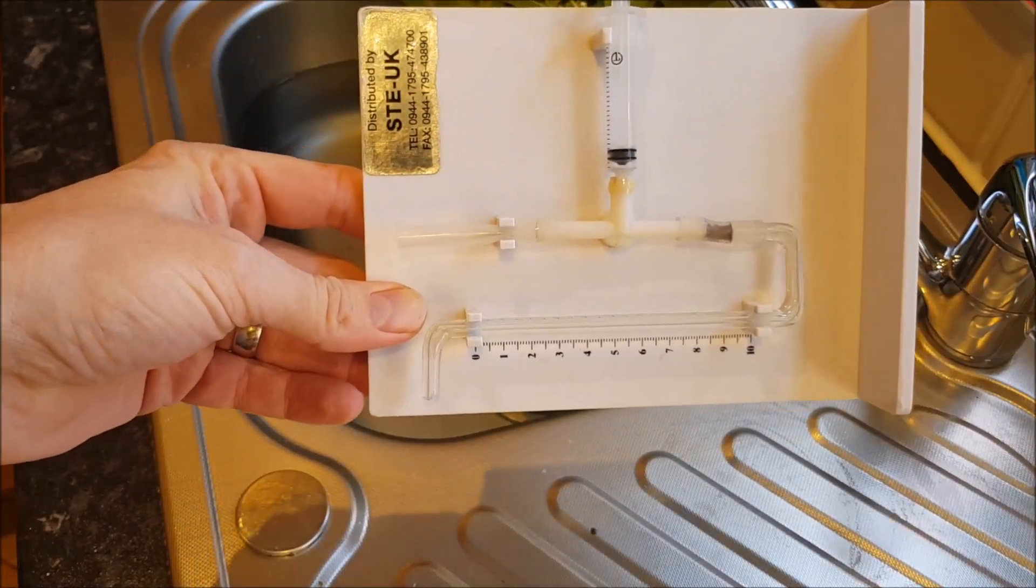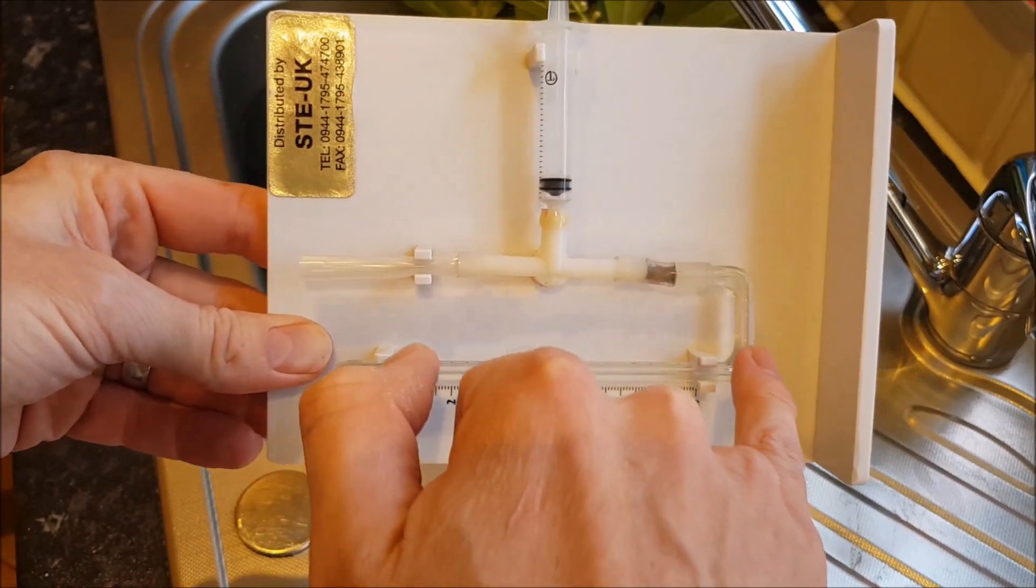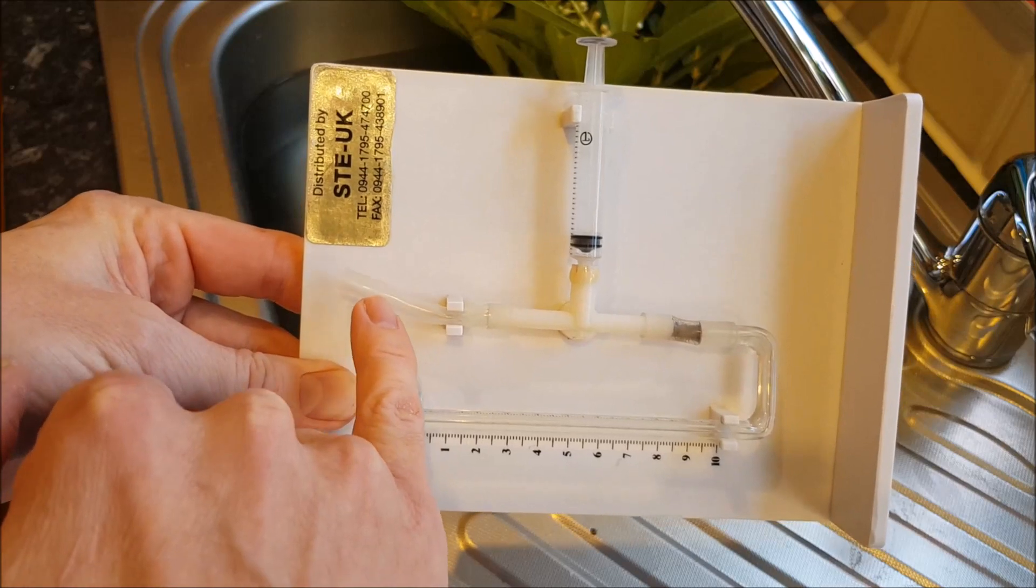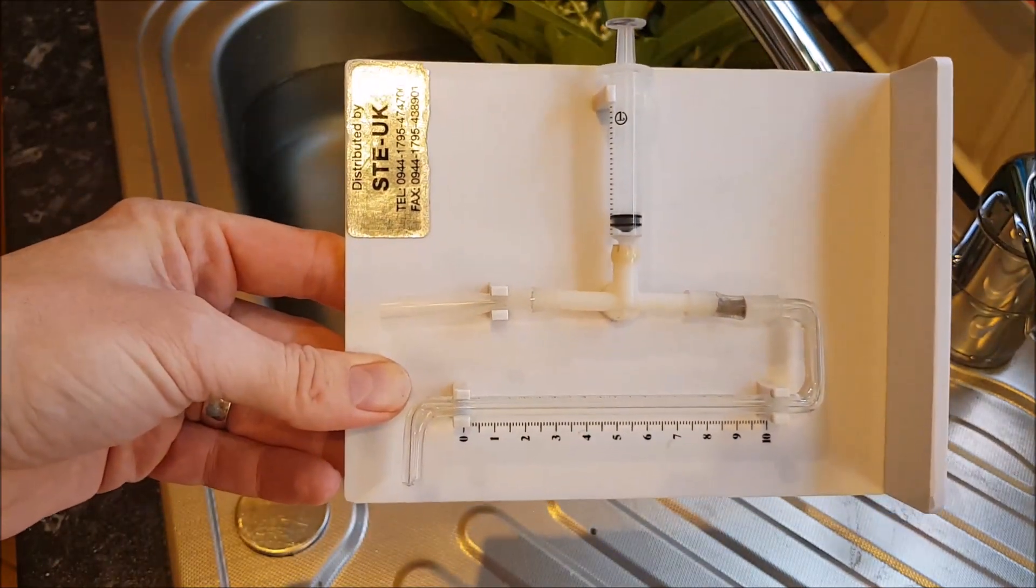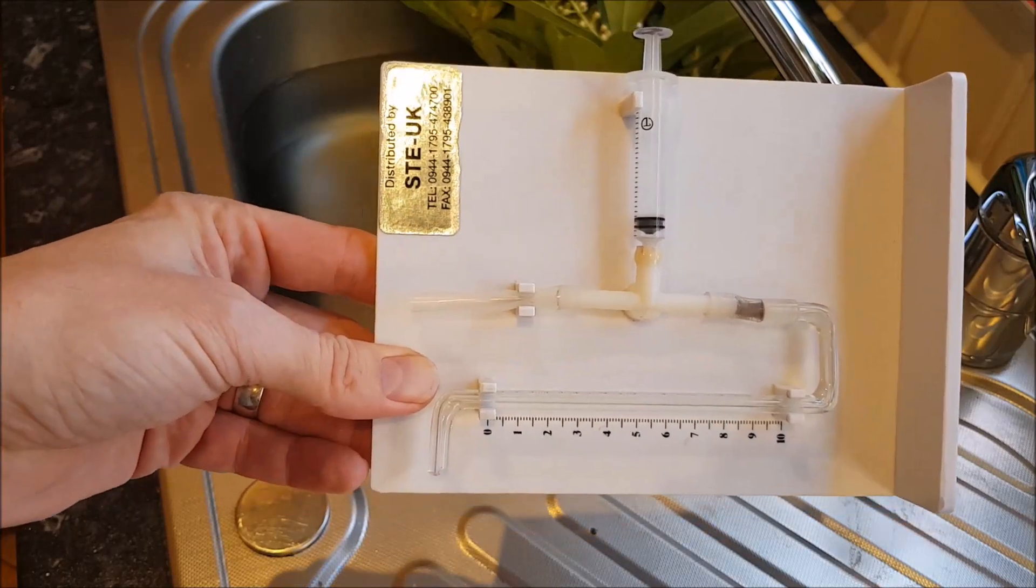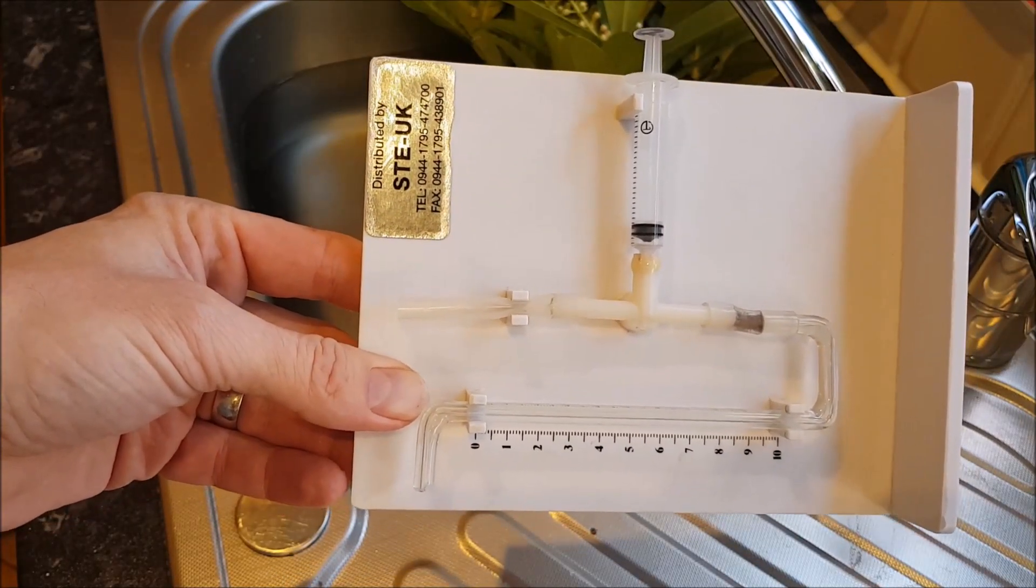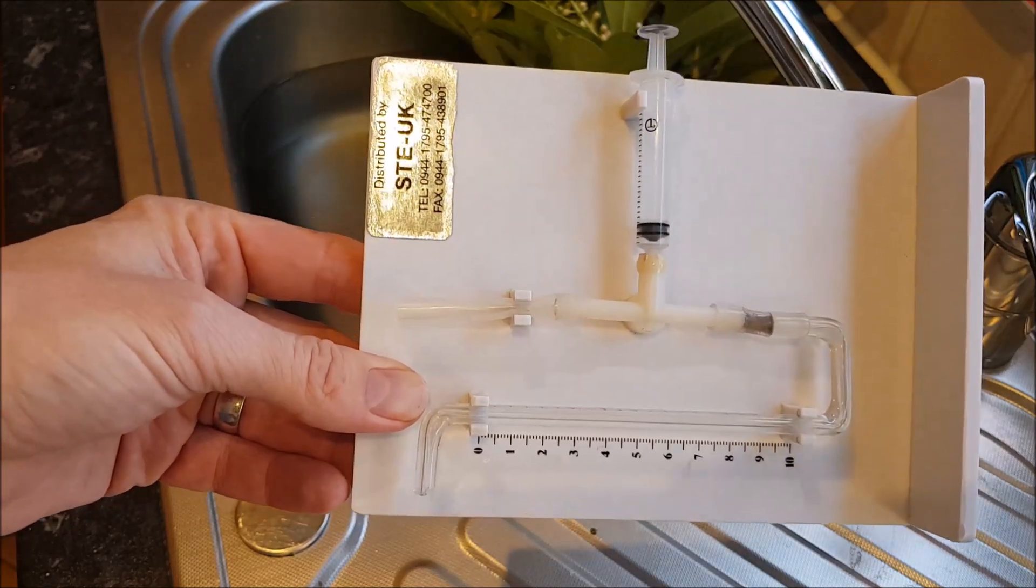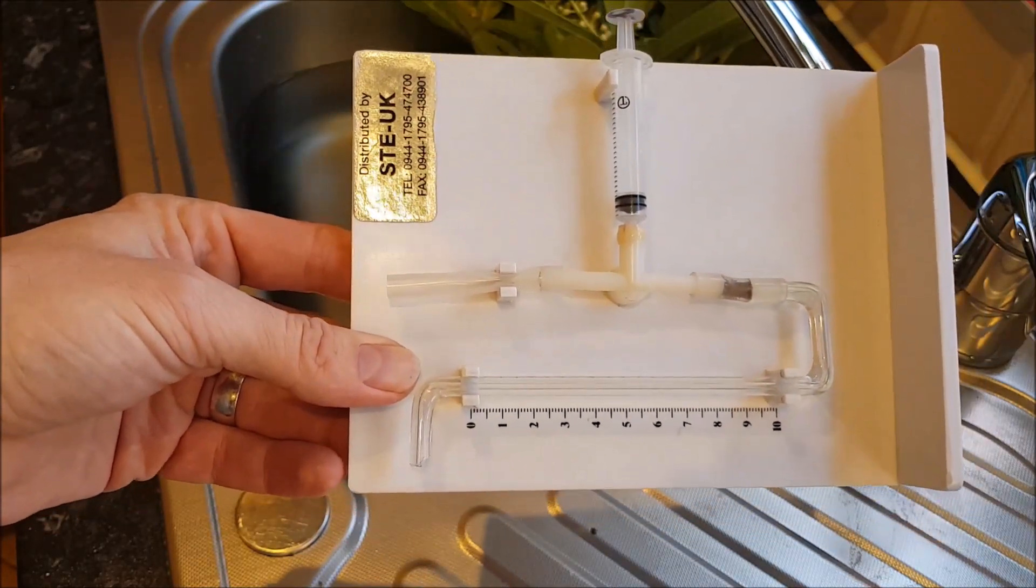This is a potometer. You can see it has a capillary tube and then it connects up to some plastic here, there's a syringe and then there's some rubber tubing. Now a potometer is used for measuring water uptake which is equivalent to transpiration, but because plants use water for photosynthesis and they might be using some of it for turgidity, it's not an exact measurement but we assume that it is. So water uptake equals transpiration.